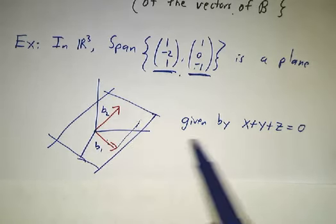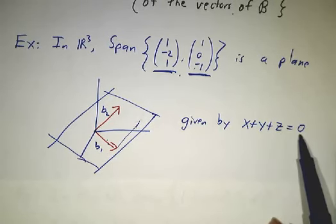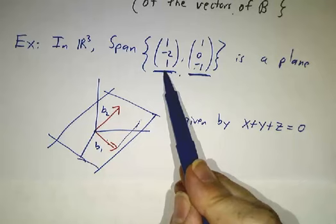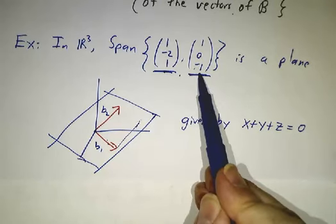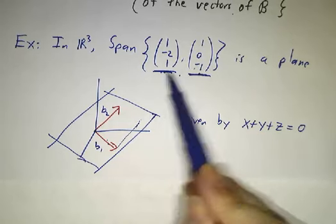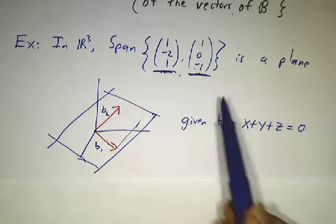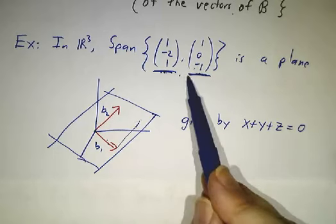And in fact, it turns out to be the plane given by the equation x + y + z = 0. You can see that this satisfies that equation, this satisfies that equation, and 37 times this plus 24 times that also satisfies the equation. Any linear combination will have the sum of all three coordinates equal to 0.